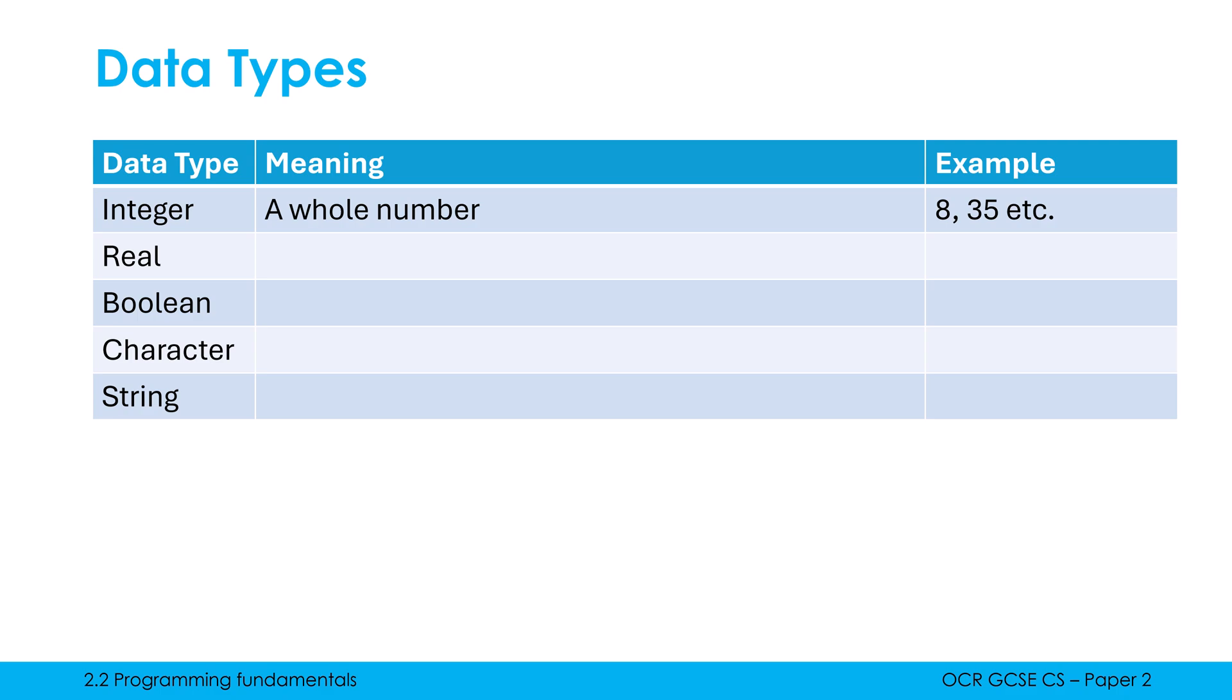So the integer data type is a category for any whole number. 8, 35 are whole numbers. Minus 7 is a whole number. It just has no fractional part. A real, on the other hand, is a number which does have a fractional part. And again, this will get stored in binary using a different method. At GCSE, you've just learned how to convert integers into binary. To convert reals into binary, that is covered at A-level.